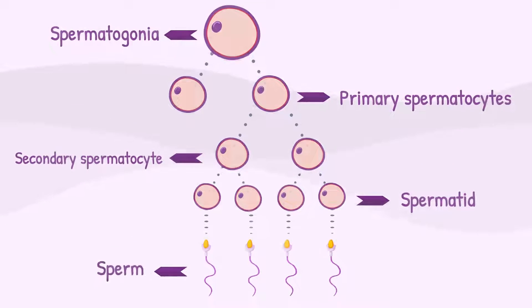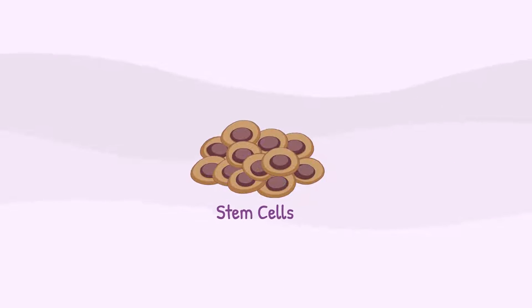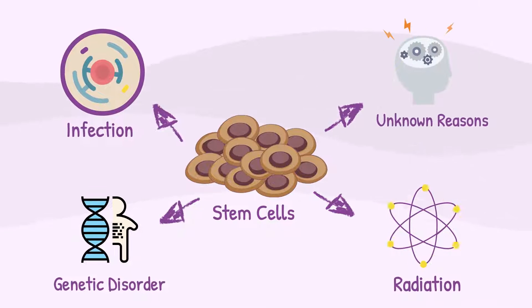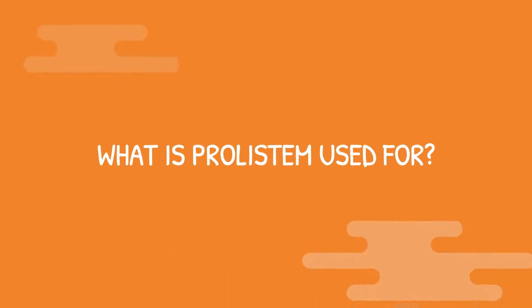In primary testicular failure, the spermatogonia are blocked and cannot produce sperm. This may be a result of a genetic disorder, radiation, infection, or unknown reasons.